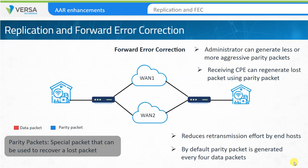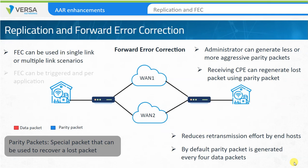FEC can be enabled for nodes that connect using single links as well as multi-homed nodes. Like with packet replication, FEC can be triggered only when necessary. Administrators can also choose to replicate just FEC packets over multiple links. With packet replication and forward error correction, administrators can have better control over the user experience even when links are experiencing problems in the WAN.